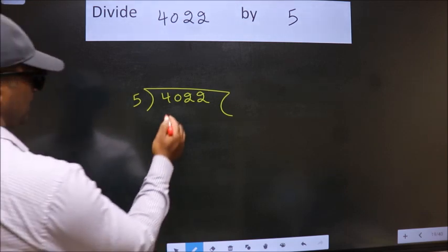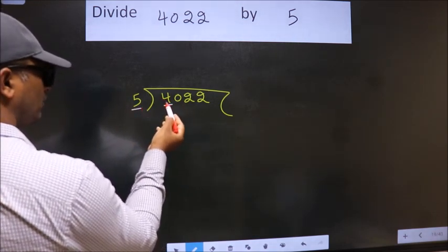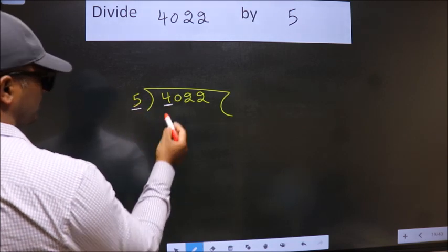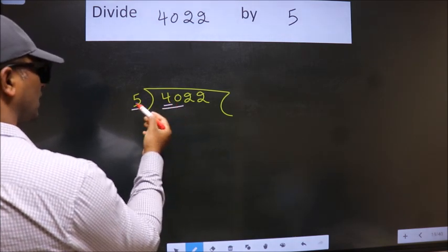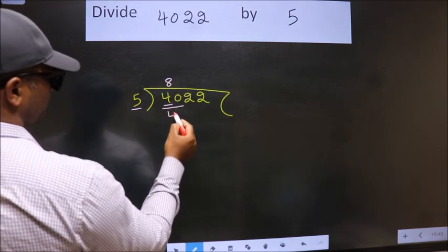here we have 4. Here 5. 4 is smaller than 5. So we should take two numbers, 40. When do we get 40 in 5 table? 5 eights 40.